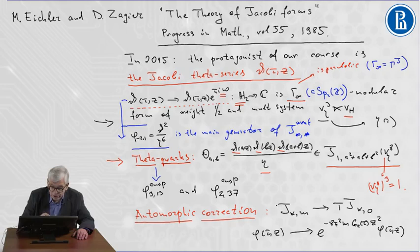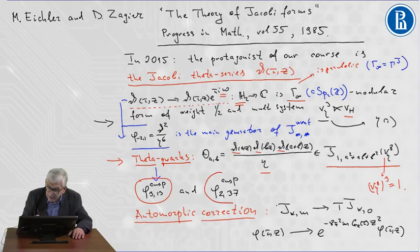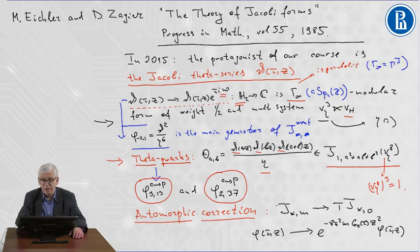In this way, we get the first Jacobi cusp form of weight three and index 30. In a similar but more complicated procedure, we can construct the first Jacobi cusp form of weight two. This function has index 37.